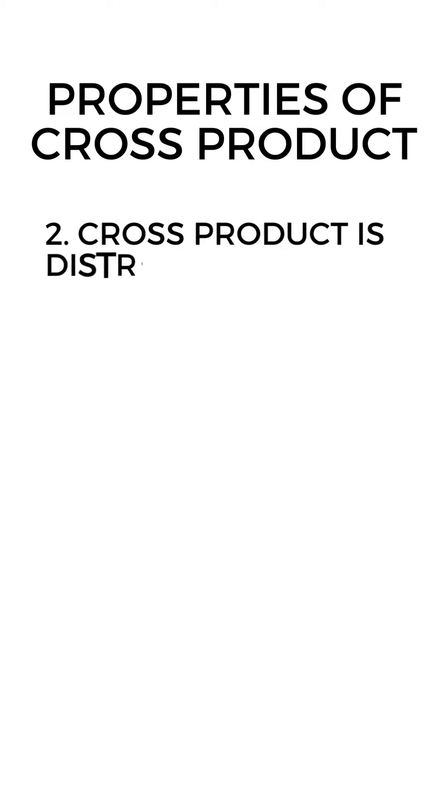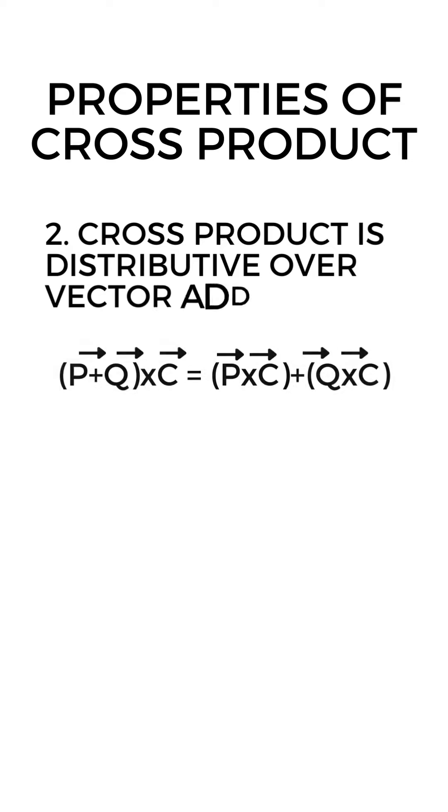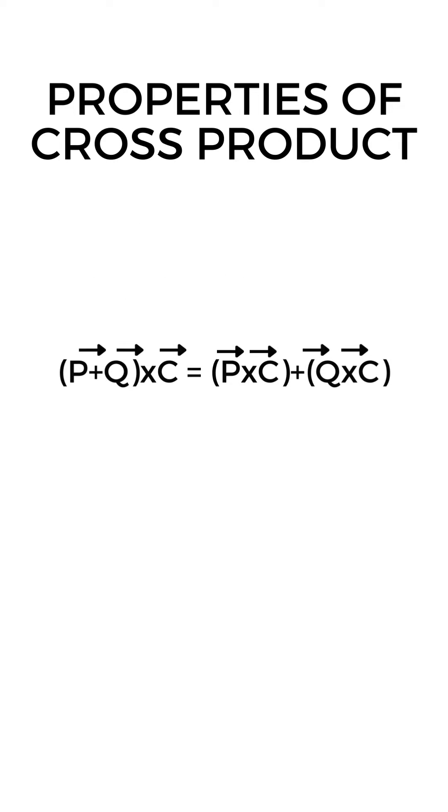Second, the cross product is distributive over vector addition, meaning that (P plus Q) cross C equals P cross C plus Q cross C.